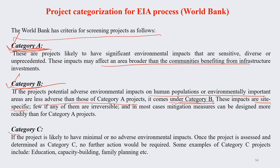Category C covers projects likely to have minimal or almost no adverse environmental impacts. Once a project is assessed and determined as Category C, no further action is required and the project can go ahead. Category C projects may include education-type projects like building a school or college, capacity-building projects, or family planning projects.